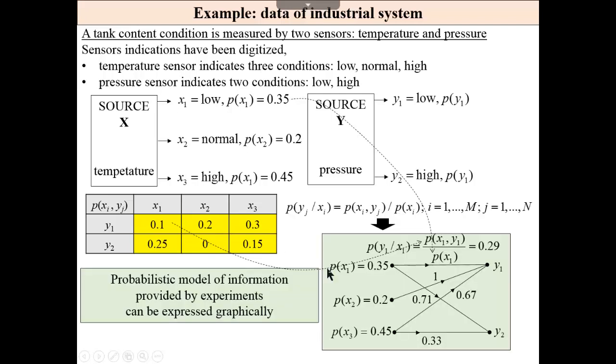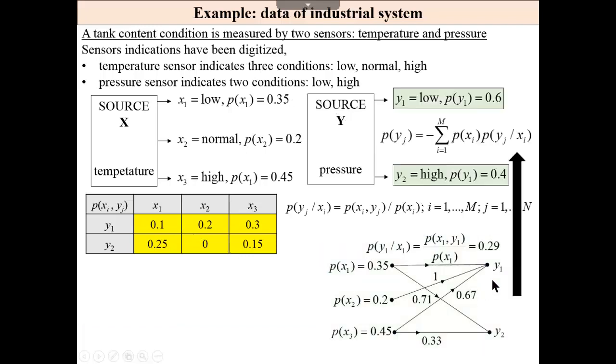If so, we can easily calculate conditional probabilities and give the probabilistic model of this relationship. This probability 1 is probability that if x2, then y1. Having these joint probabilities, we may calculate all the entropies here. First of all, we have to calculate the output probabilities.